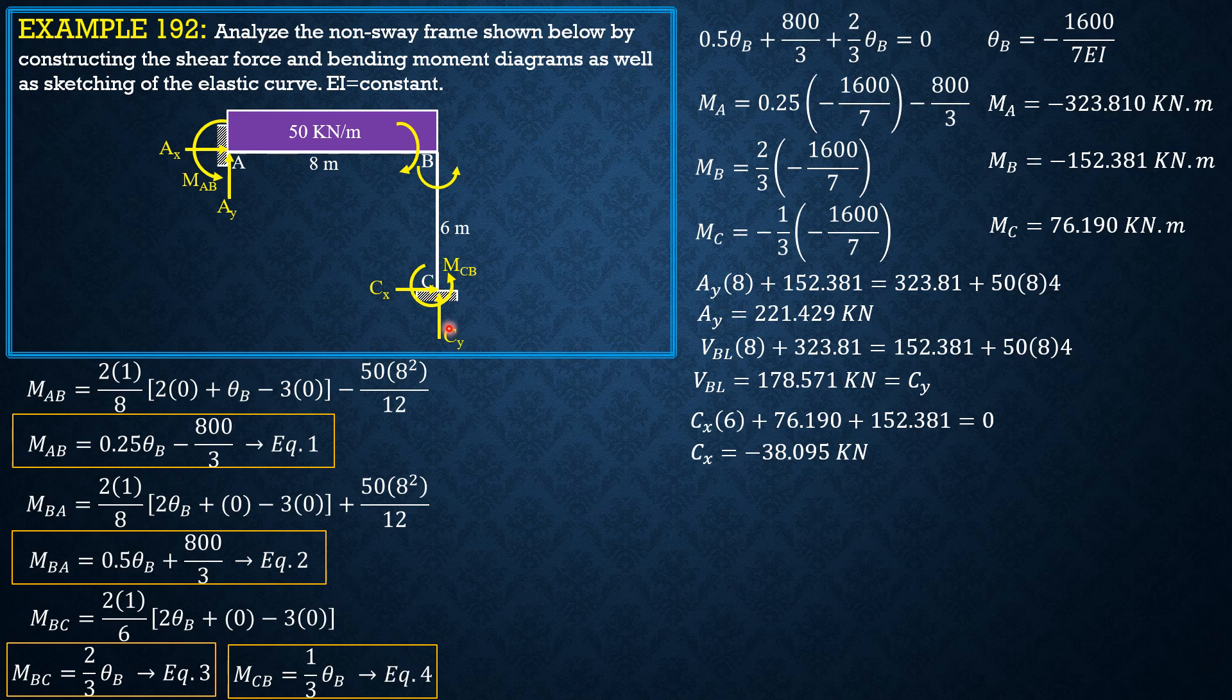Then considering the entire system, summation of forces in x, we conclude that Ax is rightward because Cx is leftward. So Cx is 38.095 kilonewtons leftward. Therefore, Ax is 38.095 kilonewtons rightward.